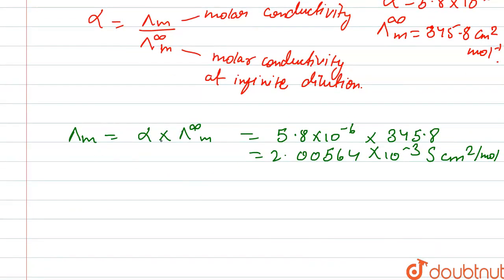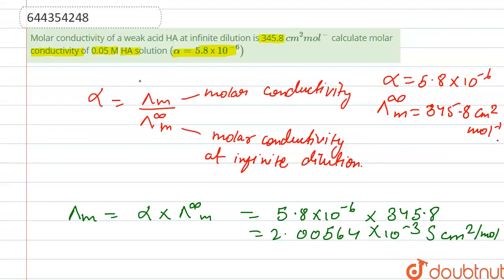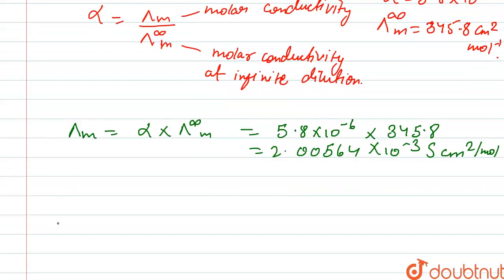But this is the value for 1 M, and we have to calculate for 0.05 M HA. So we need the conductivity of 0.05 M HA.